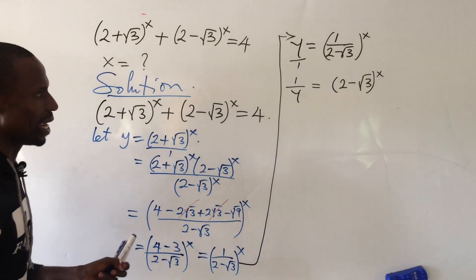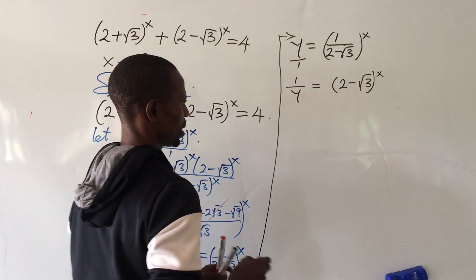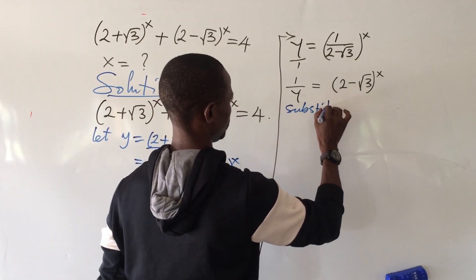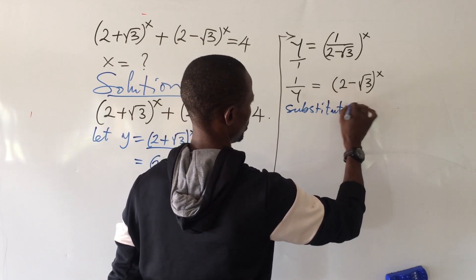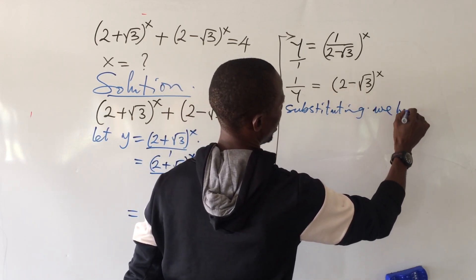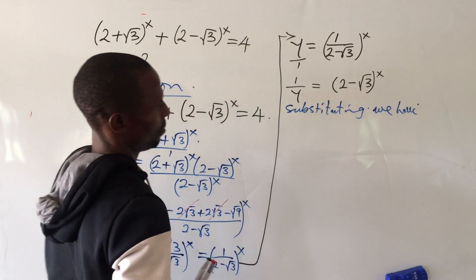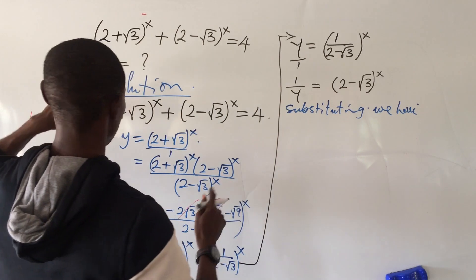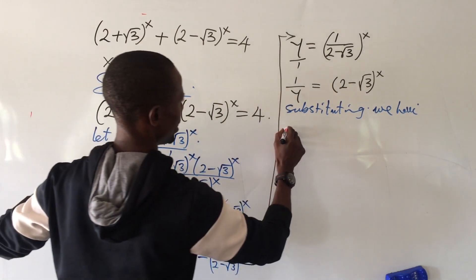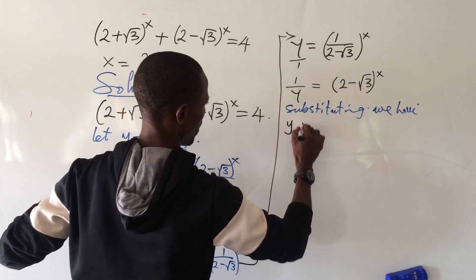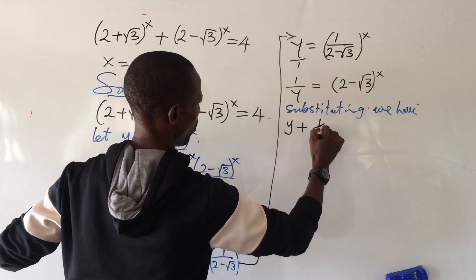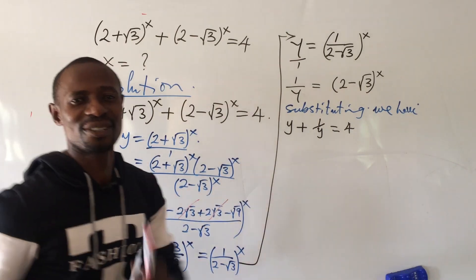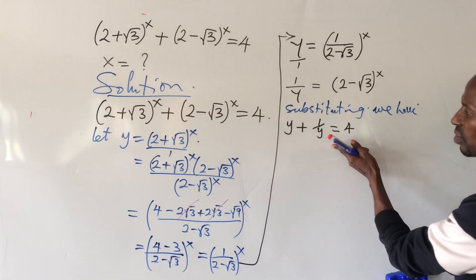We can now substitute. The first expression we replace with y, and we now have y plus 1 all over y equals 4. So the initial equation has been reduced to this format. We clear the denominator y by multiplying through by y. This gives us y squared plus 1 equal to 4y. Collecting like terms, this gives y squared minus 4y plus 1 equals 0.